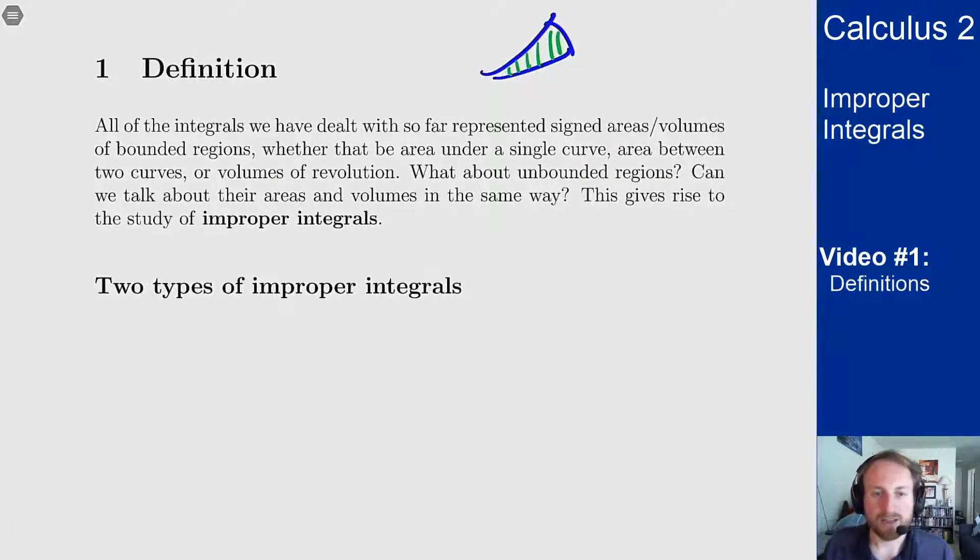So there's two main types of improper integrals and it basically depends on how the region goes to infinity. It either can go to infinity by the bound of the integral going to infinity or by the function going to infinity.